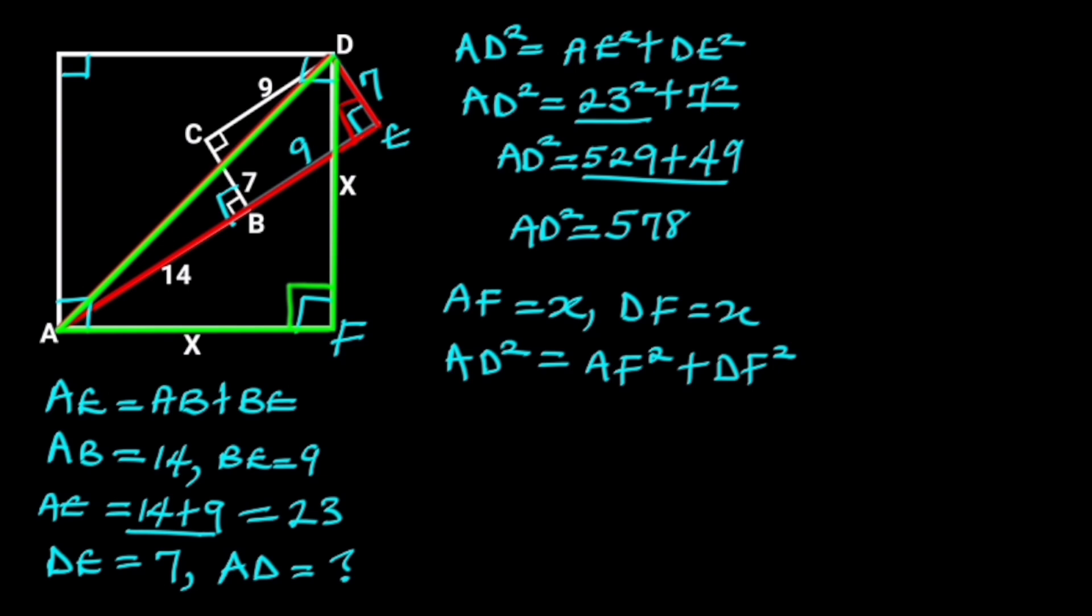it follows that 578 is equal to X squared plus X squared. X squared plus X squared is 2X squared. So, 578 is equal to 2X squared.